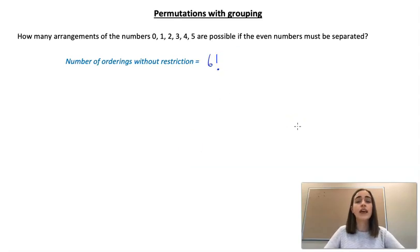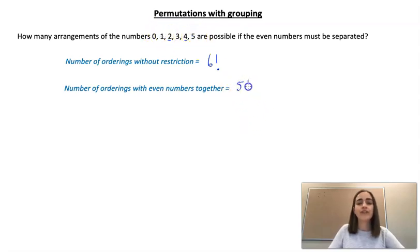Okay, so the next thing was how many ways can I arrange them if my even numbers must be together. So if I count my 2 and my 4 as one group, that means that I only have five things to arrange. So I'm going to have 5! times and then I have to arrange those two numbers within their group. So the 2 and the 4 could be arranged in 2! different ways.